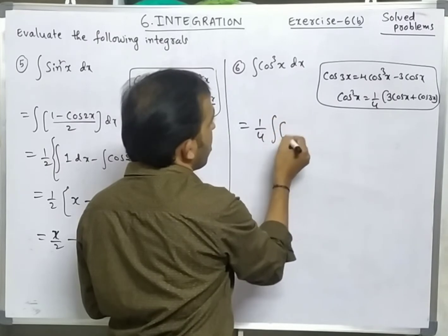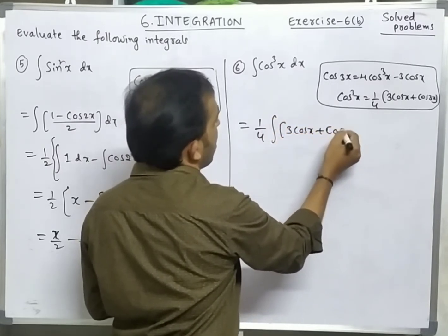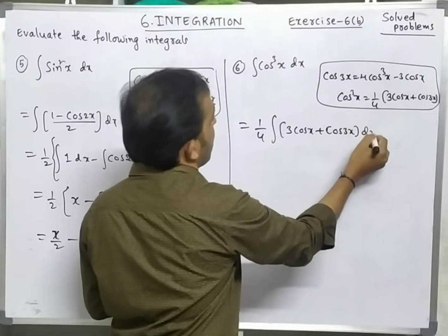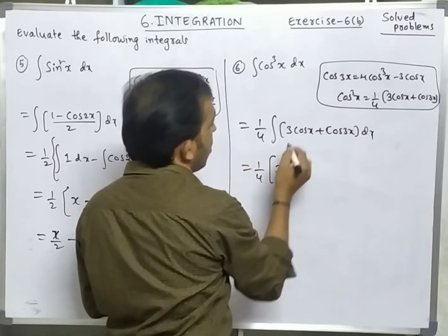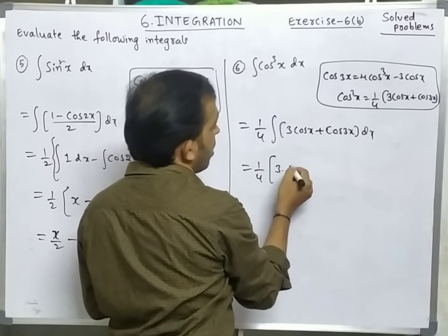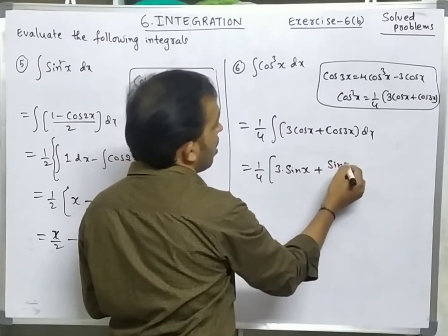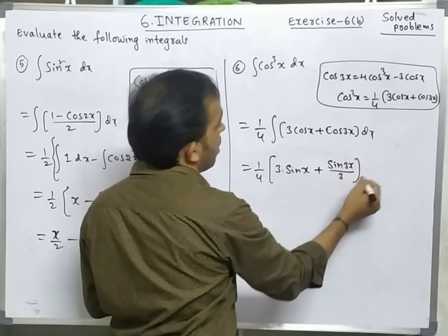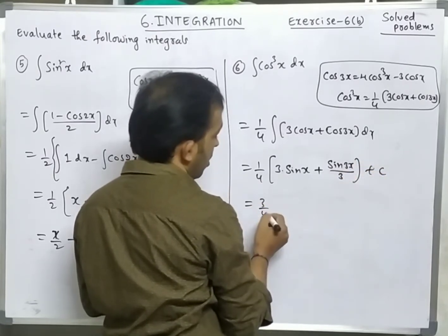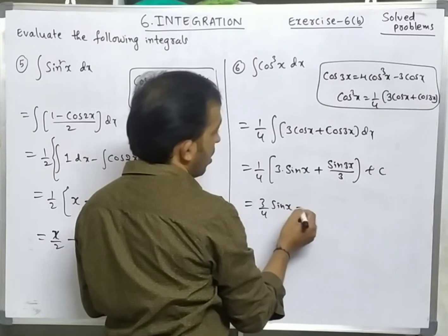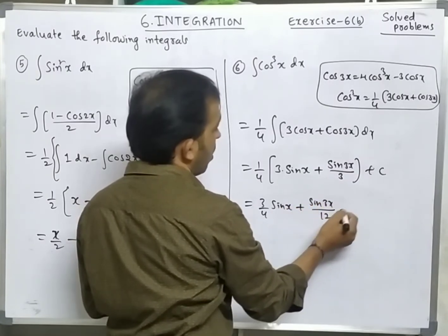That is why you should be strong in trigonometry also. Now cos³x can be written as (1/4)(3cos x + cos 3x). Take 1/4 outside: (1/4)·integration of (3cos x + cos 3x) dx. Integration of cos x is sin x, and integration of cos 3x is sin 3x/3.